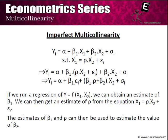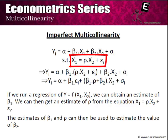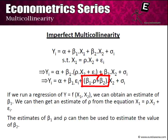In this case, we get an estimate for α, an estimate for β1, and an estimate for (β1·ρ + β2). Since we can also obtain an independent estimate of ρ by regressing x1 on x2, and we already have β1, we can find β2. Hence, it is possible to find independent estimates of β1 and β2 when running yi as a function of x1 and x2.